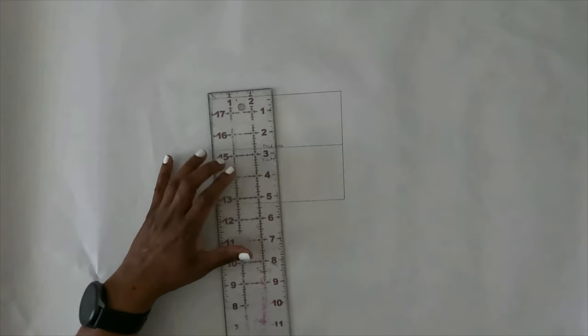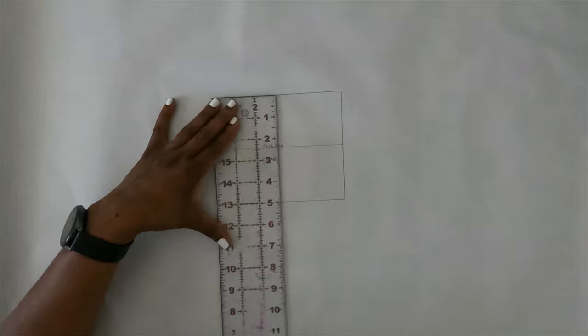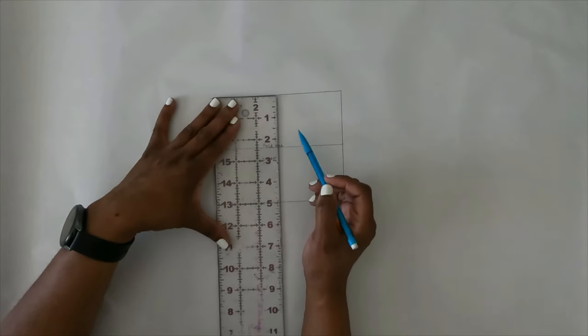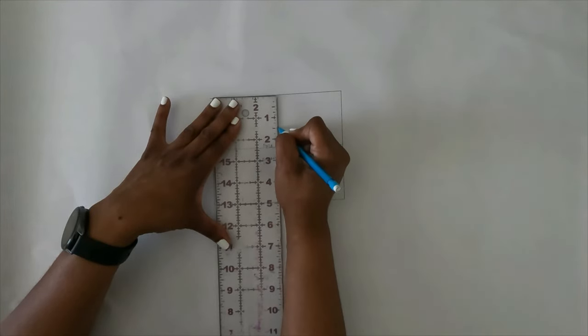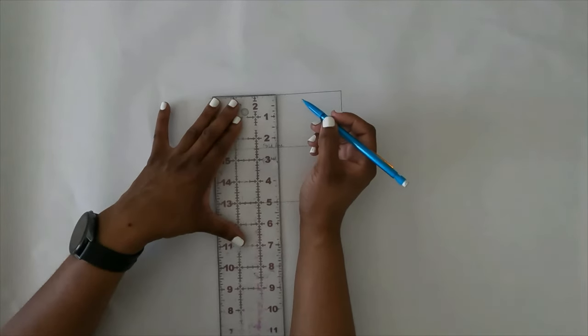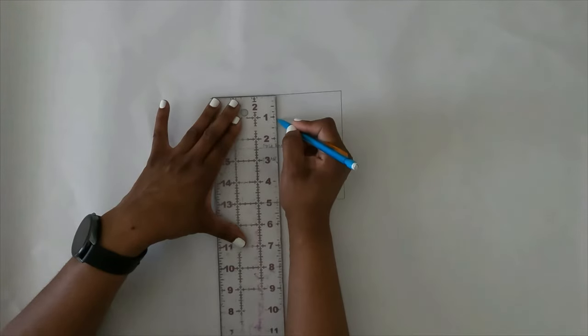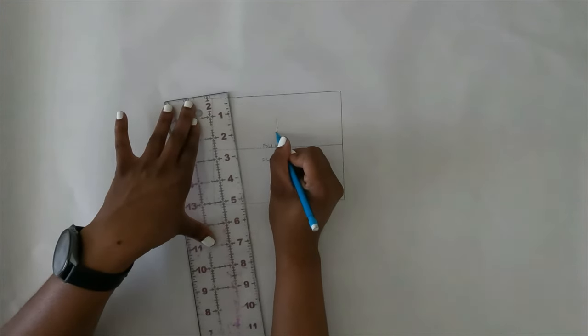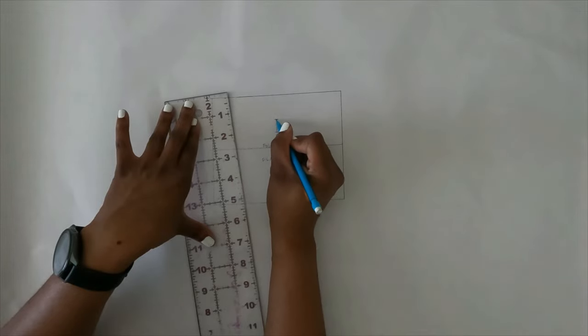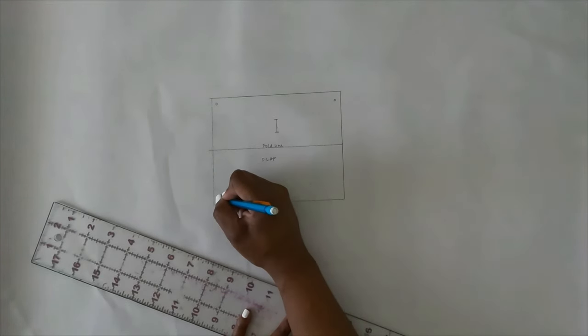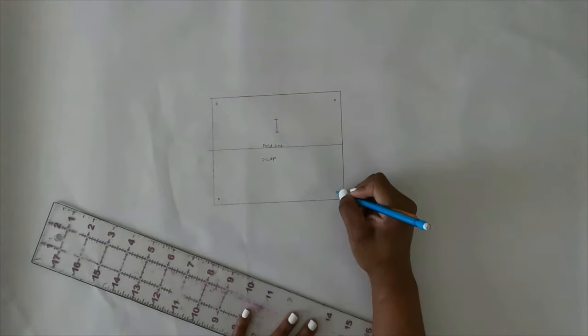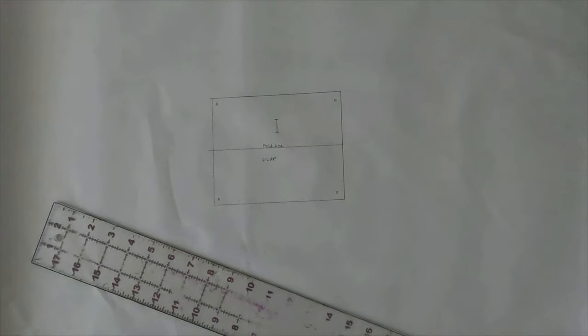And then you also need to mark your buttonhole. So you're going to measure up and down. Once again, that should be five inches. So you're going to go to about one and a half, mark it. And then you're just going to make a buttonhole line for your flap. Just make it right there at the top. And then if you want, you could just put some dots right here so you know where you want to mark your dots and that's it.